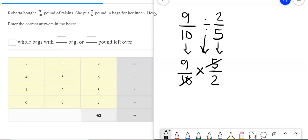We're going to cross-cancel our five in our ten, because five divided by five is one, and ten divided by five is two. Nine times one is nine. Two times two is four.